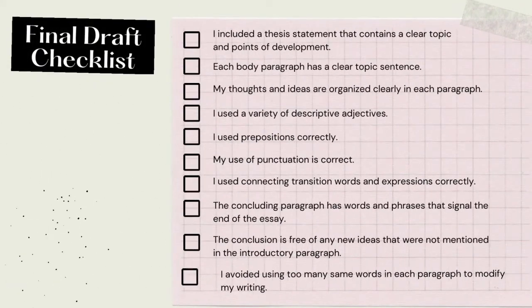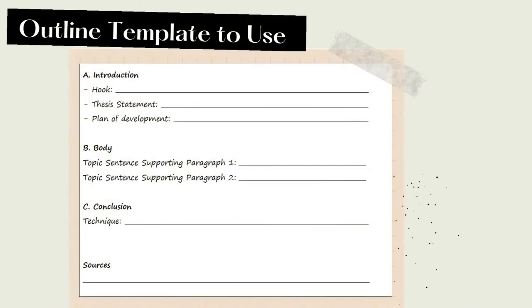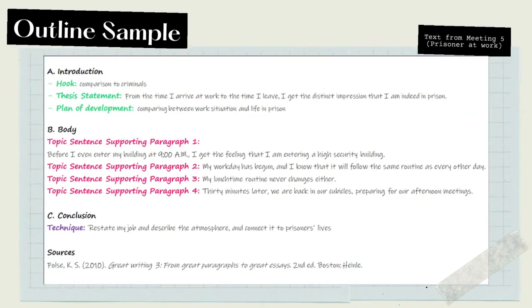Use the following checklist to review your final draft. Use all feedback you have received. When you finish, add a title to your essay. You can also use the following template in developing your outline. The outline sample is based on the reading text you have from Meeting 5, Prisoner Edward. Use this to help your first outline making.